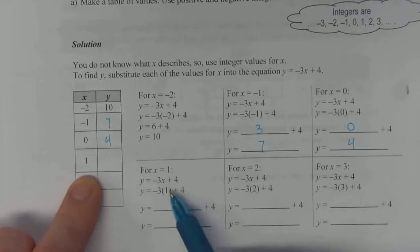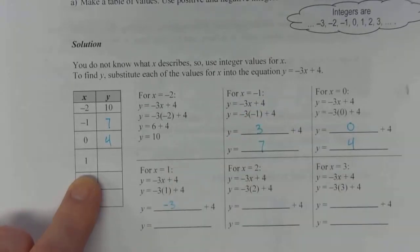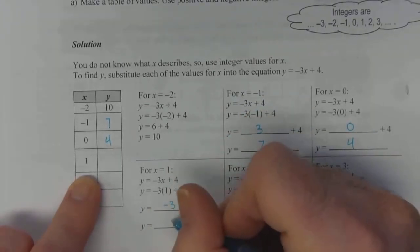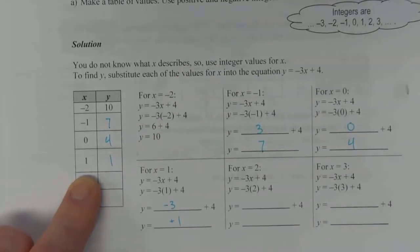So x equals 1. Substitute it in. Negative 3 times 1 is negative 3. Add 4 to that, and you end up with positive 1. So 1 and 1 is a point on the graph.